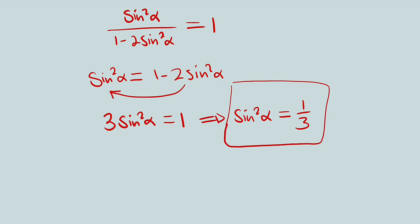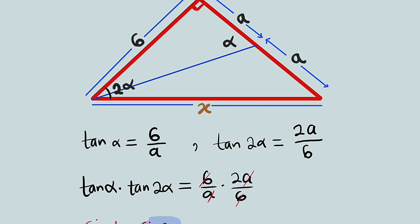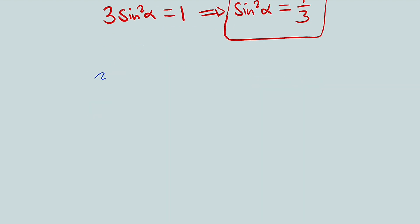Let's go back to the diagram. We want to find the cosine of angle 2 alpha. Using SOH-CAH-TOA, cos(2 alpha) = adjacent divided by hypotenuse. The adjacent is 6 and the hypotenuse is x, so cos(2 alpha) = 6/x.